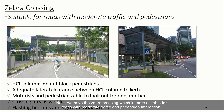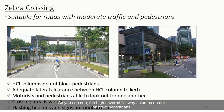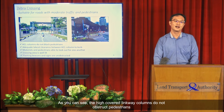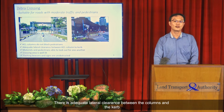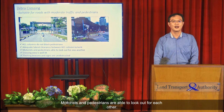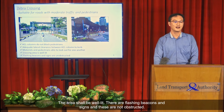Next, we have a zebra crossing, which is more suitable for roads with moderate traffic and pedestrian interaction. On the left is a mid-block zebra crossing and on the right is a zebra crossing at a slip road. The HCL columns do not obstruct pedestrians, there is adequate lateral clearance between the columns and the curb, motorists and pedestrians are able to look out for each other, the area is well lit, and the flashing beacons and signs are not obstructed.